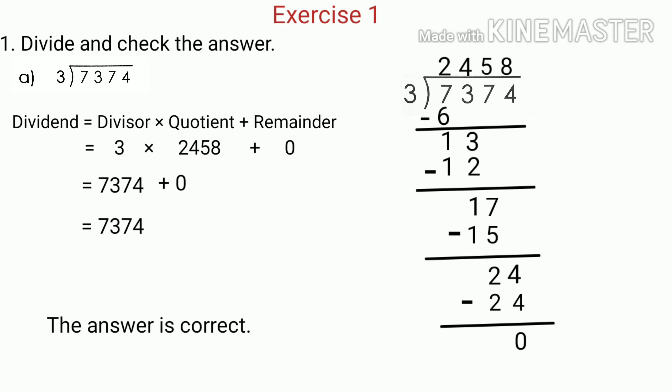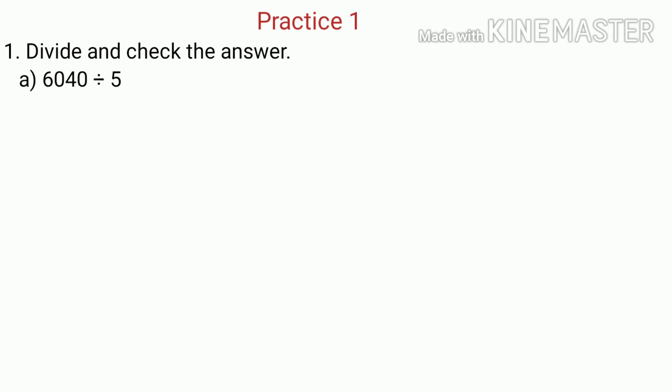Now let's solve one question from practice 1. Question number 1: divide and check the answer. Number A — 6040 divided by 5. Here 6040 is the dividend and 5 is the divisor. We put 6040 under the division bar and 5 outside. We compare the leftmost digit of the dividend with the divisor — the leftmost digit is 6 and the divisor is 5.